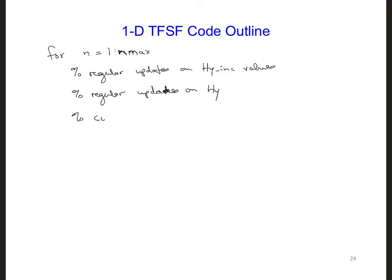And then we need corrections at the total field scatter field interfaces. And this is on Hy in the primary grid. Now that we've updated all the H fields in both grids, so they'll be time-stepped in sync with each other, we can move on to the electric fields.